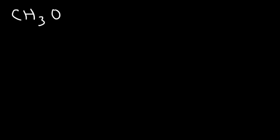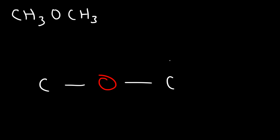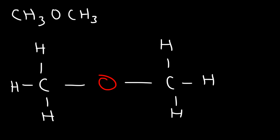Now let's work on another example — dimethyl ether. I'm going to start with the oxygen in the middle. Oxygen likes to form two bonds, and on each side we have a methyl group, or CH₃ group, with each carbon containing three hydrogens. Oxygen, when it has two bonds, is going to have two lone pairs. So that's the Lewis structure for dimethyl ether.